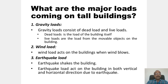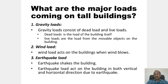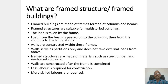The major loads coming on tall buildings are gravity load, wind load, and earthquake load. Gravity load consists of dead load and live load. Dead loads are the load of the building itself, and live loads are the loads from movable objects on the building. Wind load acts on the building when the wind blows. Earthquake load acts on the building in both vertical and horizontal directions.